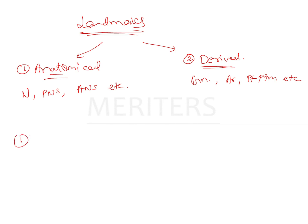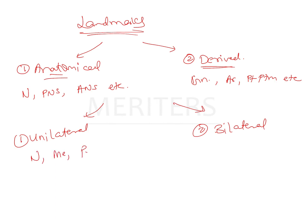Landmarks can also be classified as unilateral and bilateral. Unilateral landmarks are those structures which appear along the midline and are single in number, such as the nasion, the menton, and the pogonion — all unilateral structures present along the midline.